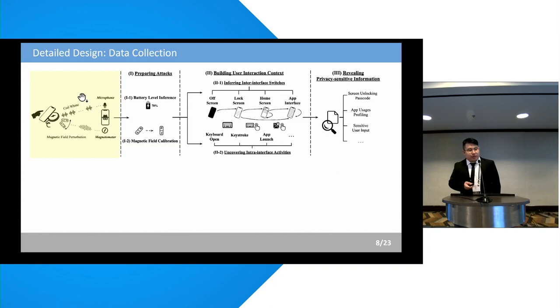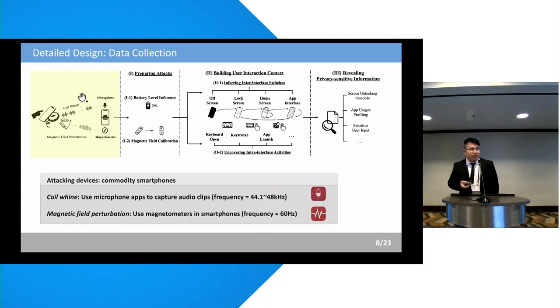First, for data collection, an attacker can use commodity smartphones as an attacking device, which can be much stealthier to be put next to the victim without suspicion, and use the running apps, microphone apps to capture all the clips that contain coil whine, and use the magnetometer to measure the magnetic field perturbations.